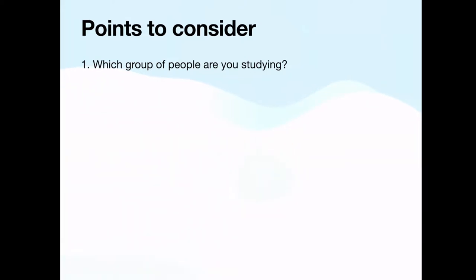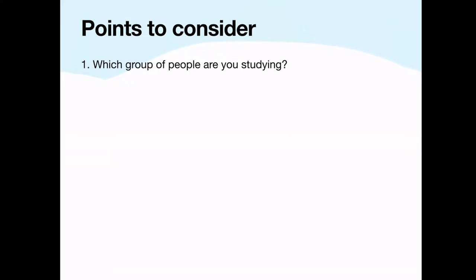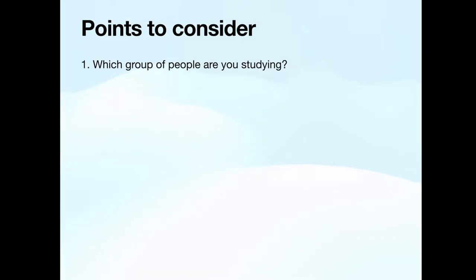I do have another video on how to select a research topic — the link will be in the description. There I talk about accessibility to respondents. The respondents must be accessible to you, and you must be confident that you will be able to collect data from 100 or 200 people. So the first point when selecting a scale is to decide which group of people you are studying.